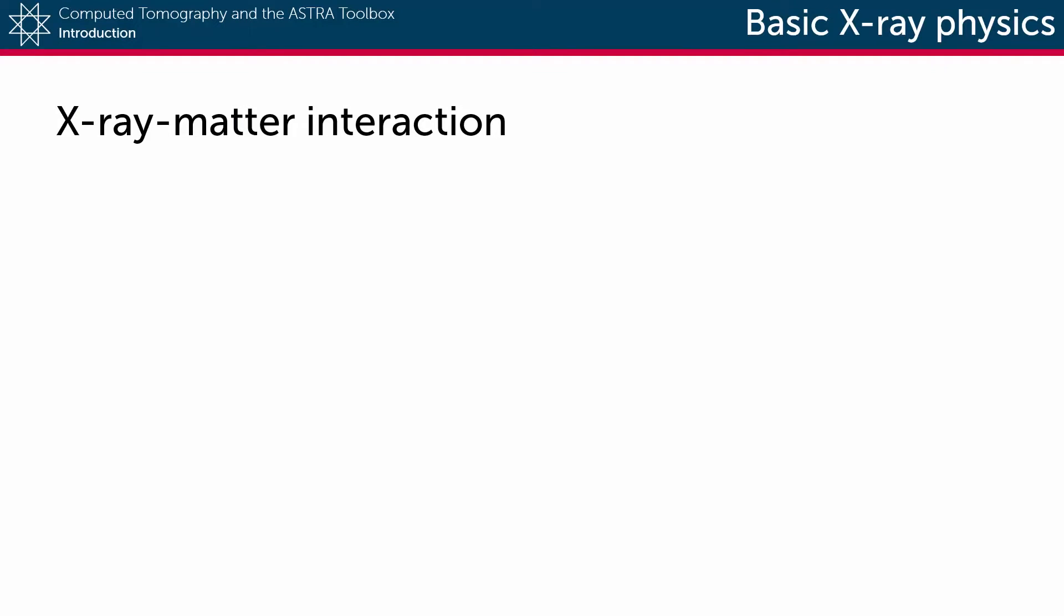As an X-ray photon traverses an object, many of the object atoms will lie in its way. And if a collision occurs, then obviously the X-ray photon will never reach a detector.